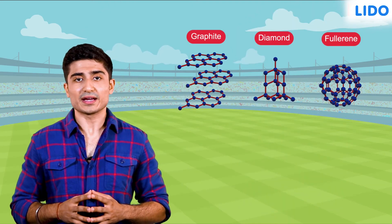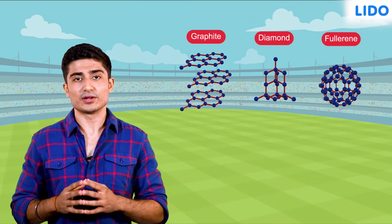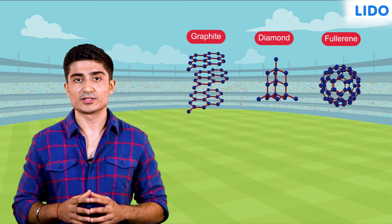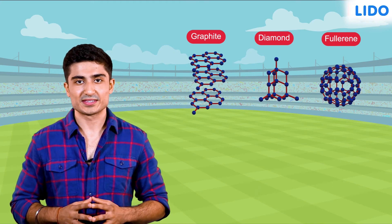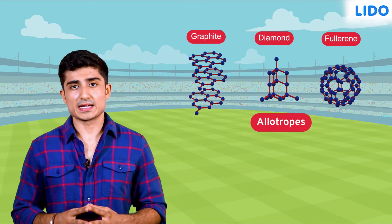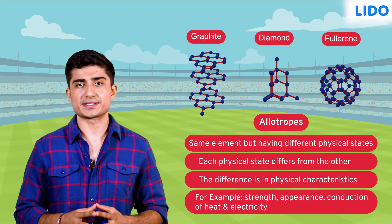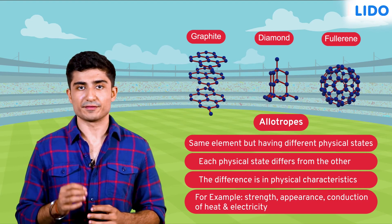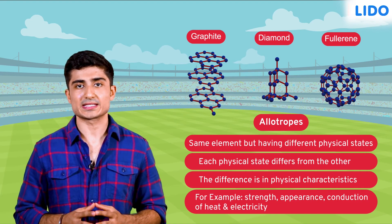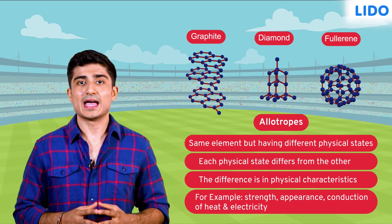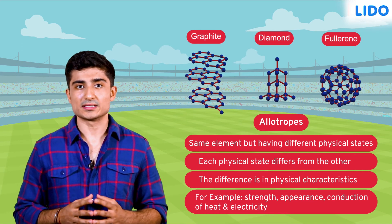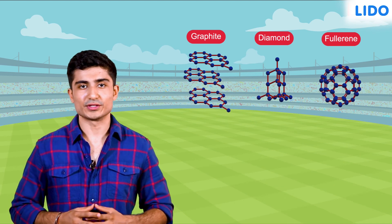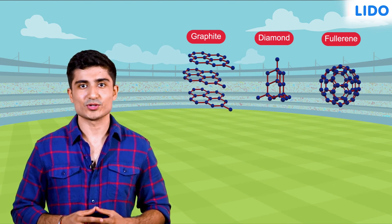So you see, while graphite, diamond, and fullerene are all made up of carbon, they are completely different because of the arrangement of the carbon atoms. Thus, allotropes are the different physical states of the same element, showing striking differences in physical characteristics like strength, appearance, as well as conduction of heat and electricity. That's all for today folks, see you next time.